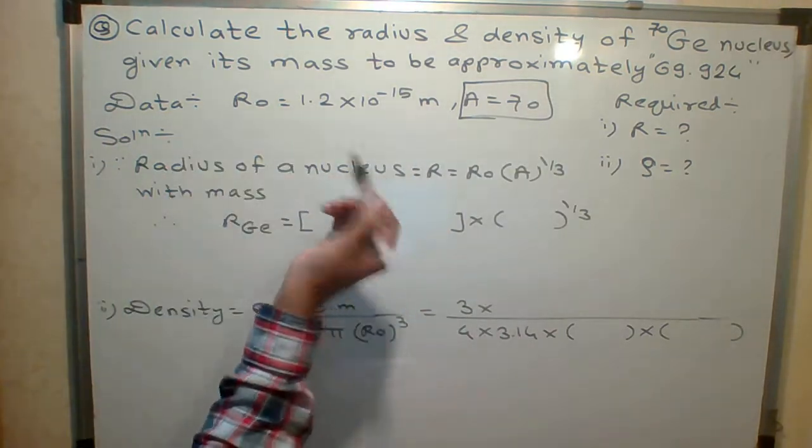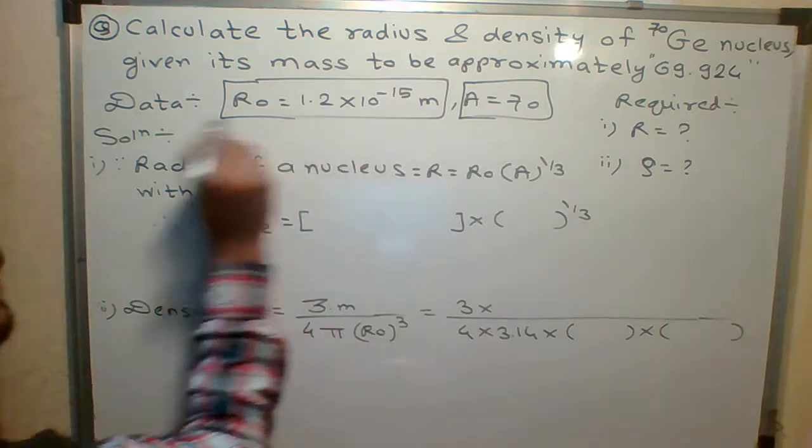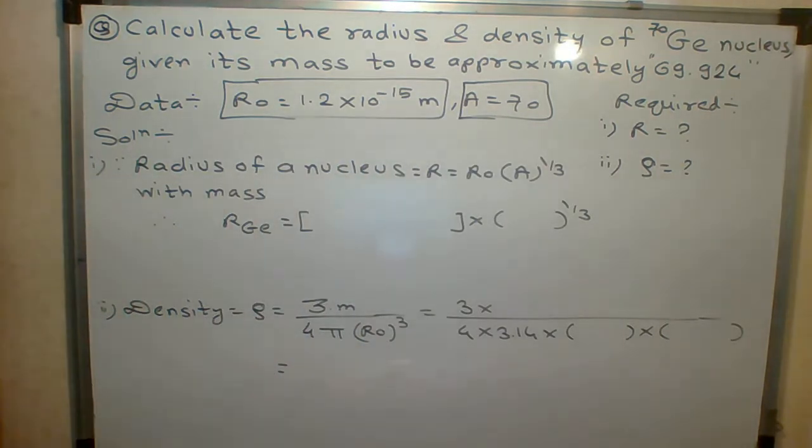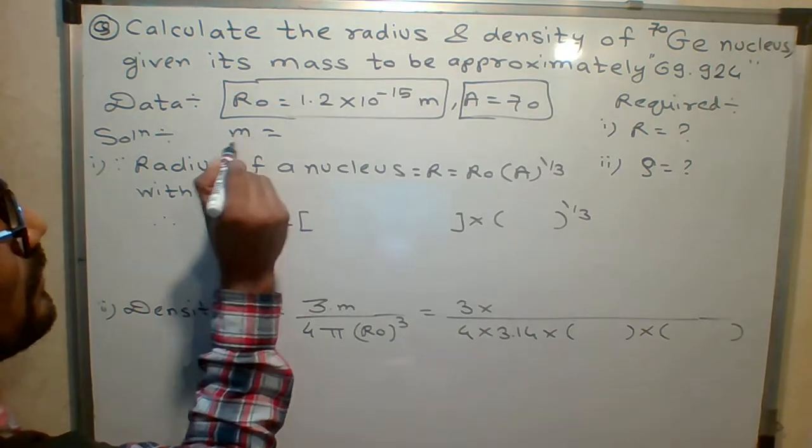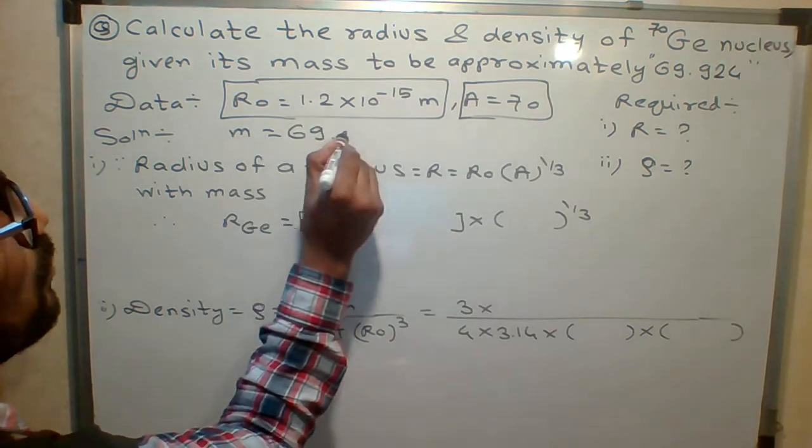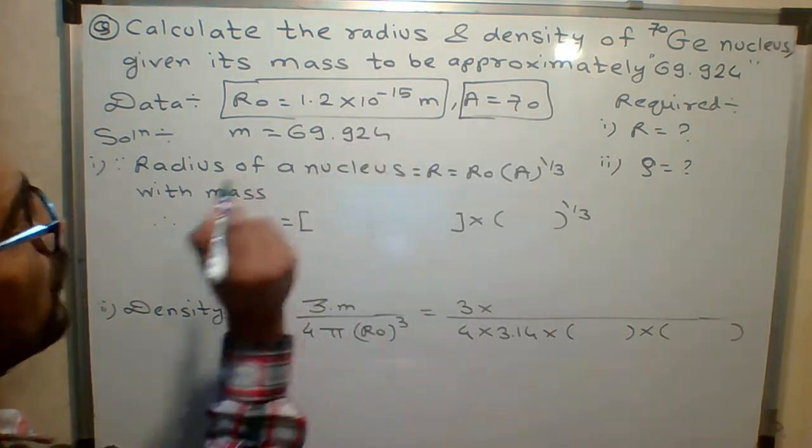You know the standard value of R0, which is 1.2 × 10^-15 meters. The mass is given as 69.924, which is already provided in the problem.